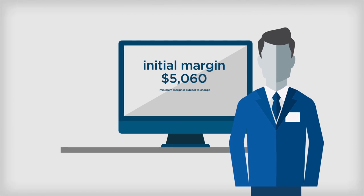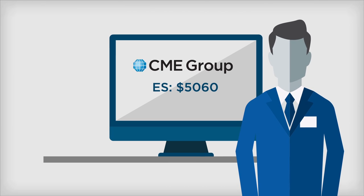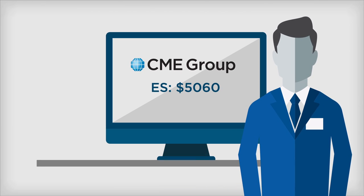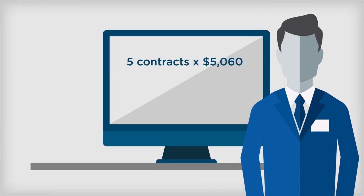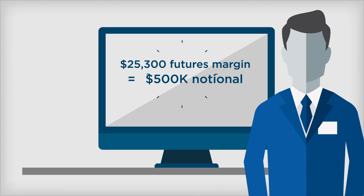you'd post the initial margin for each contract you entered. CME's initial margin requirement for the ES is currently around $5,060 per contract. So with your $30,000, you'd have $500,000 worth of exposure.